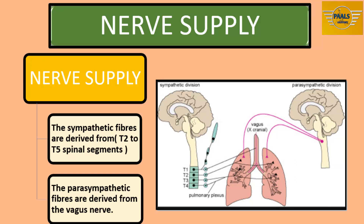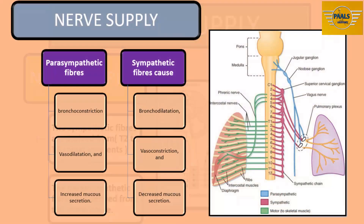The lung has both sympathetic and parasympathetic nerve fibers. The sympathetic fibers are derived from T2 to T5 spinal segments, while the parasympathetic fibers are derived from the vagus nerve. Both provide motor supply to bronchial muscles and secretomotor supply to the mucous glands of the bronchial tree. The parasympathetic fibers cause bronchoconstriction, vasodilation, and increased mucous secretion, while the sympathetic fibers bring the reverse effects: bronchodilation, vasoconstriction, and decreased mucous secretion. Afferent impulses from the bronchial mucous membrane and stretch receptors in the alveolar walls pass to the central nervous system through both sympathetic and parasympathetic fibers.